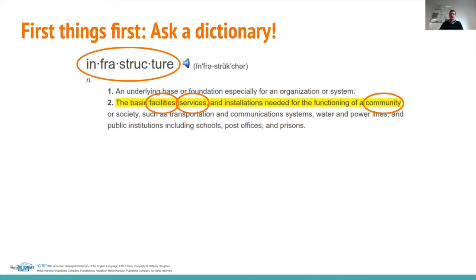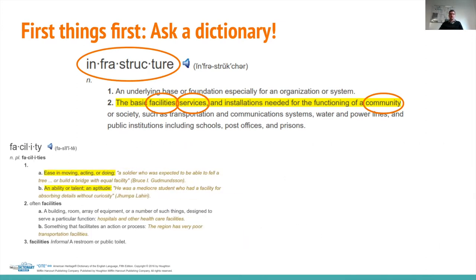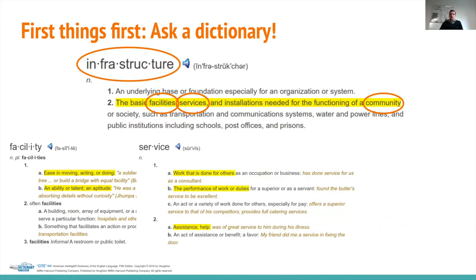We can ask the dictionary again for what facilities, services, and community are. It is quite surprising that the first things mentioned here: a facility is an ease in moving or doing something, but it's also an ability, an aptitude — which clearly indicates that we are talking about people. When we look up what a service is, it says at the first place that this is work that is done for others, duties, and more importantly, assistance and help — which clearly is an indication that we are talking about people when talking about infrastructures.